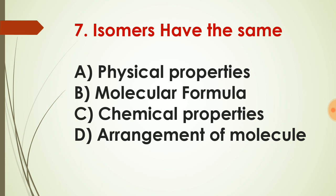Question number seven: isomers have the same physical properties, molecular formula, chemical properties, and arrangement of the molecule? Isomers actually have the same molecular formula but different physical properties, different chemical properties, and different arrangement of molecules. So the correct answer choice for question number seven is molecular formula. Try to learn about isomers with examples, because this is an important question for your entrance and higher level of study.